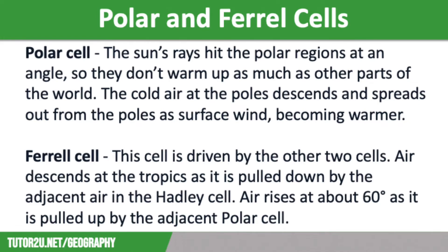The Ferrel cell moves in the opposite direction to the other two cells and acts like a gear. In this cell the surface wind will flow from a southerly direction in the northern hemisphere. However, the spin of the Earth induces an apparent motion to the right in the northern hemisphere and to the left in the southern hemisphere. This deflection is caused by the Coriolis effect and leads to the prevailing westerly and southwesterly winds often experienced over the UK.